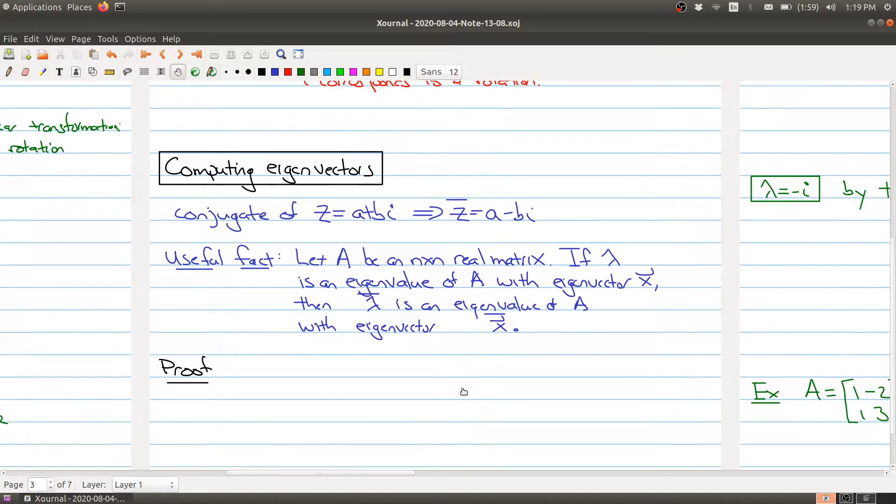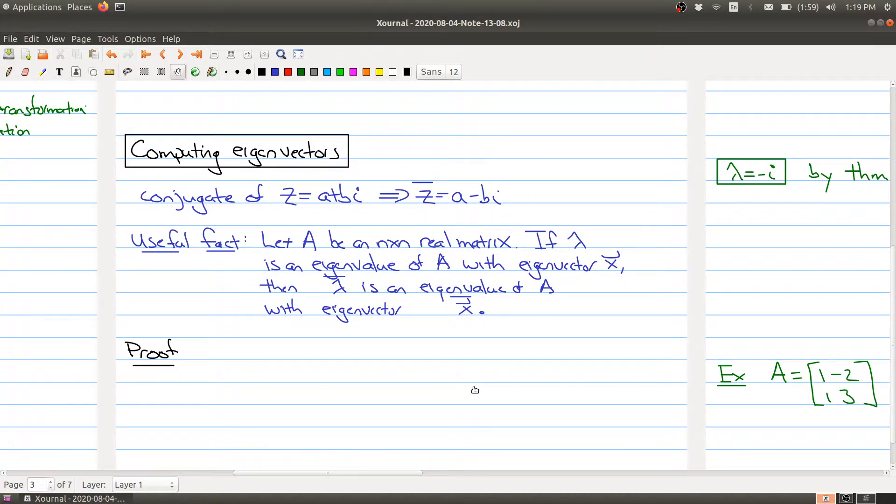Here is a very useful fact when you're dealing with these computations. Let's say you have an nxn real matrix, so all the entries in A are real, and you have an eigenvalue of A with its eigenvector.